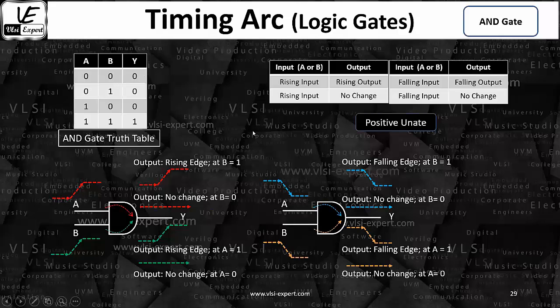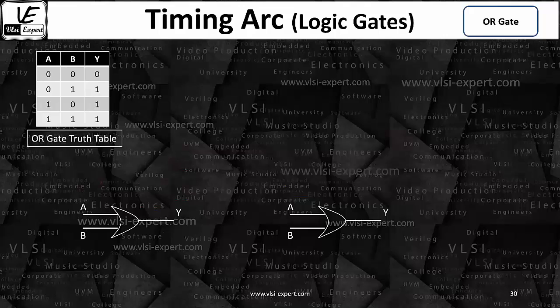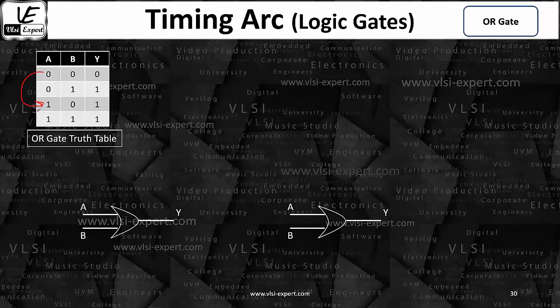Let's talk about the next one, which is an OR gate. Similarly, in an OR gate, we have a truth table. Now if A is changing from 0 to 1...